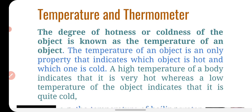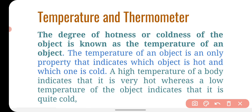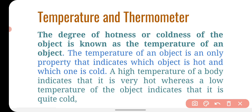To describe how hot or cold something is, we use a new term called temperature. The degree of hotness and coldness of an object is known as temperature. Temperature is a property that indicates whether an object is hot or cold.